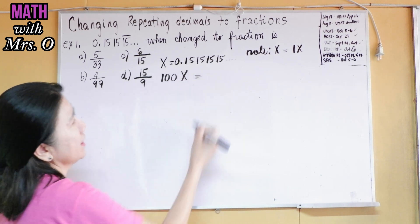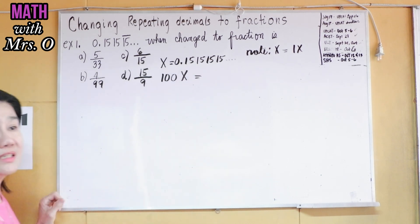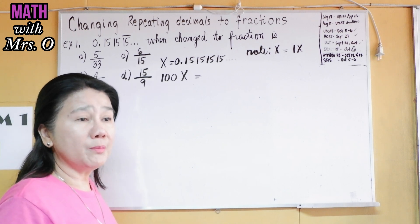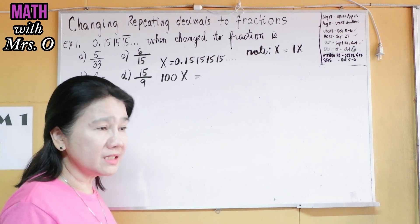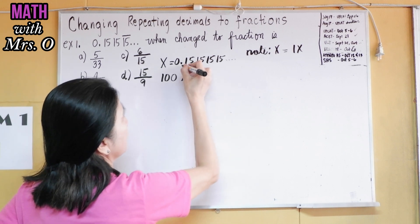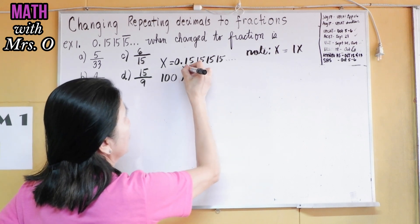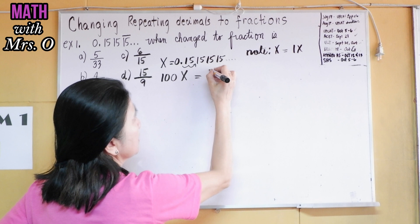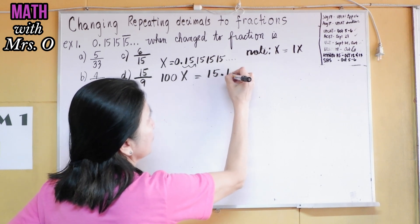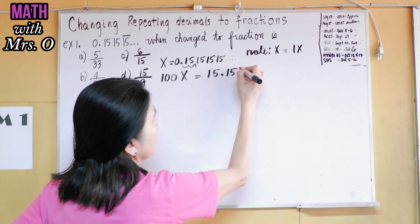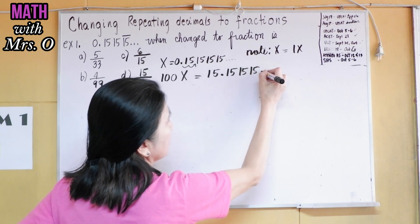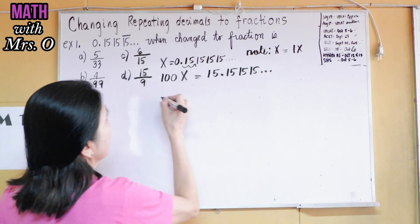Whenever we're multiplying by 100, we move the decimal point how many places? Two — two places to the right. So this becomes 15.151515 and so on and so forth.